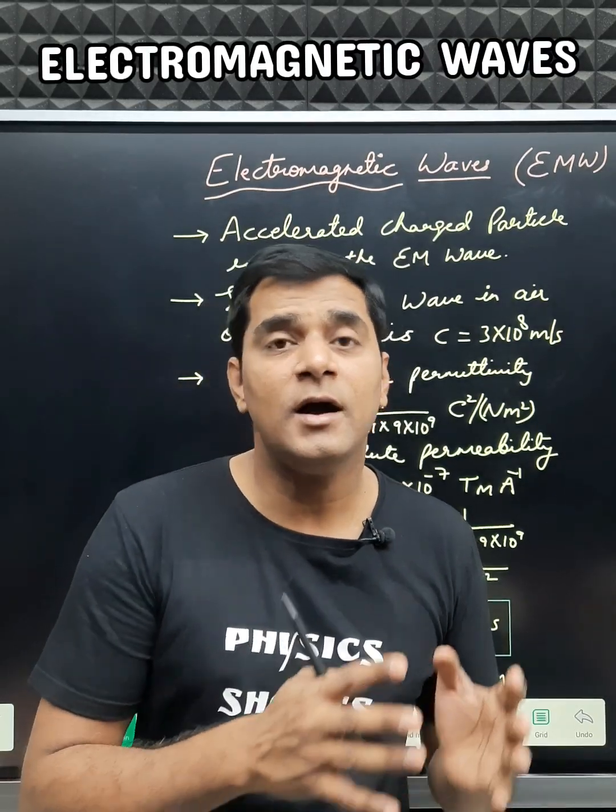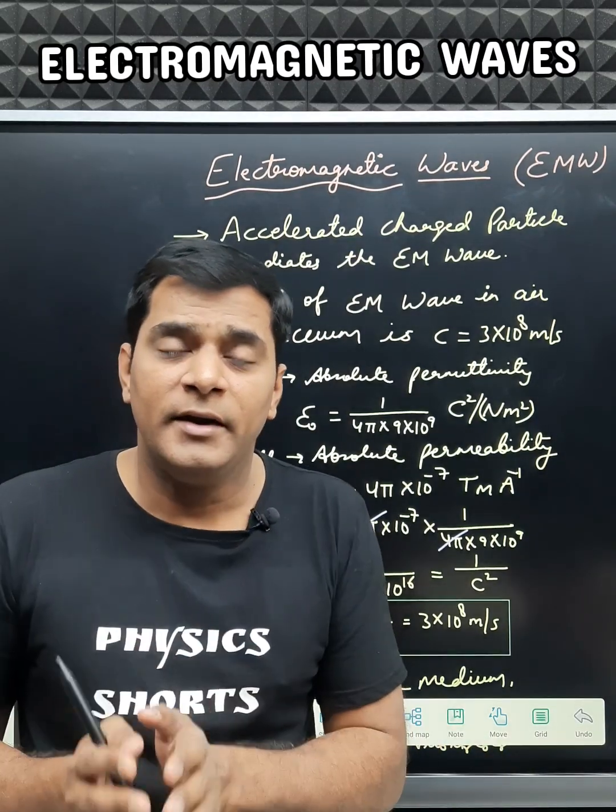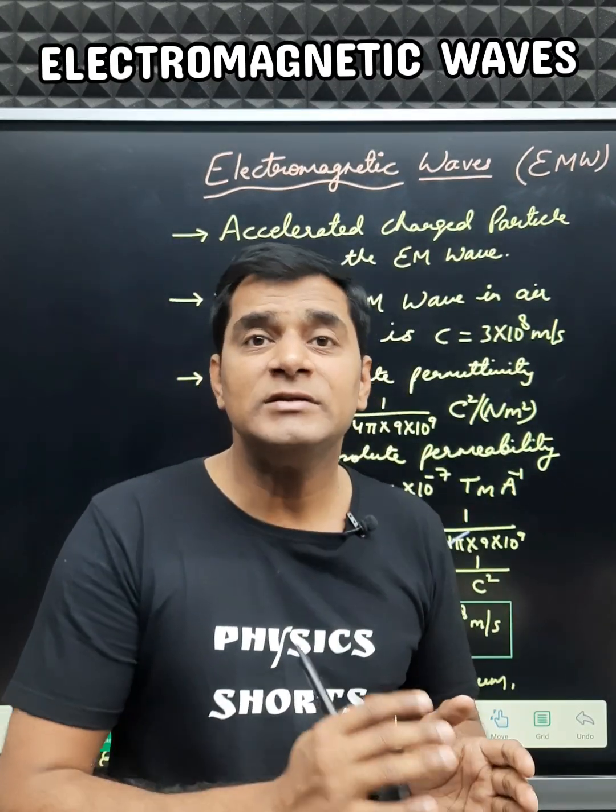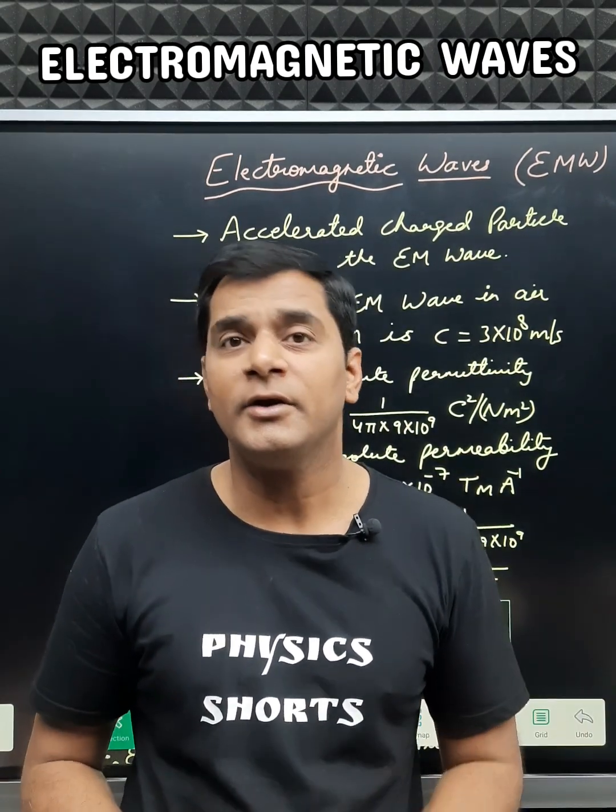Electromagnetic waves are produced by accelerated charged particles. Whenever a charged particle's velocity changes with time, it radiates electromagnetic radiation.